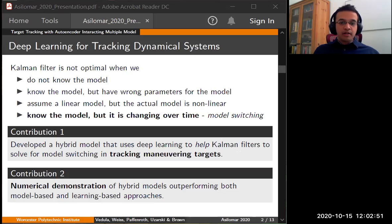And for the second contribution, we consider an application of tracking moving targets and numerically demonstrate that hybrid models such as autoencoder interactive multiple model outperform model-based approaches such as Kalman filter and IMM and learning-based approaches like LSTM.